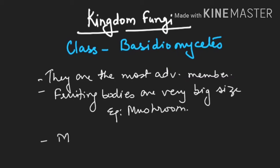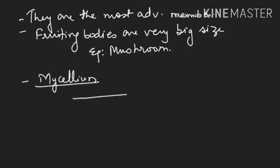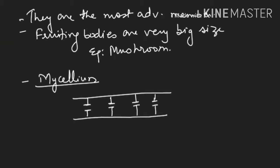Now let us discuss the mycelium of Basidiomycetes. The mycelium is septate with dolipore septa. Dolipore septa are present, and in between them you find nucleus separation. So it is having monokaryotic mycelium — with one nucleus — and it can also be dikaryotic. This is monokaryotic mycelium with dolipore septa, also called primary mycelium.